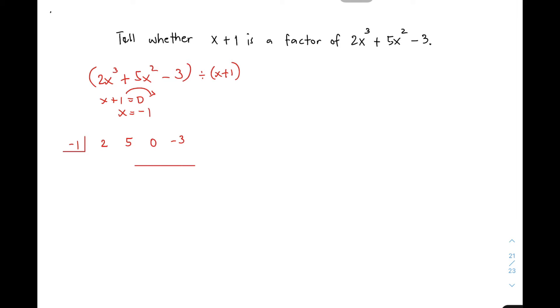Ginagamit lang natin yung synthetic division to find out what is the remainder of these polynomials when we divide them. So, next step natin is itong lay na ito. And then, bring down 2. 2 times negative 1 is negative 2. Add natin yung 5 and negative 2, that is 3. Then 3 times negative 1, that will give you negative 3.